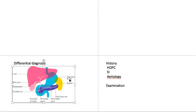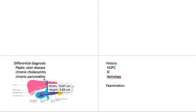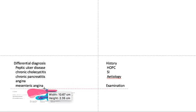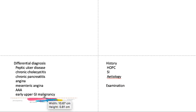This diagram will tell you what organs to include in your differential diagnosis. Sometimes cardiac pain can present here, and behind the peritoneal structures is the retroperitoneum — the pancreas is also retroperitoneal, and behind that is the aorta, so aortic pathologies are possible. The differential includes peptic ulcer disease, chronic cholecystitis, chronic pancreatitis, angina, mesenteric angina, aortic aneurysm, and early upper GI malignancies.